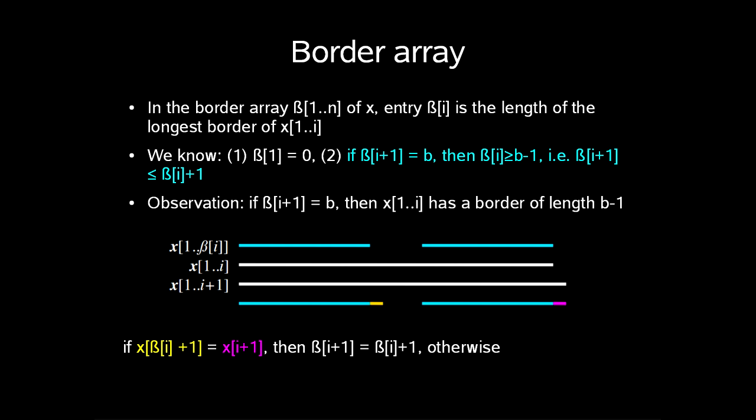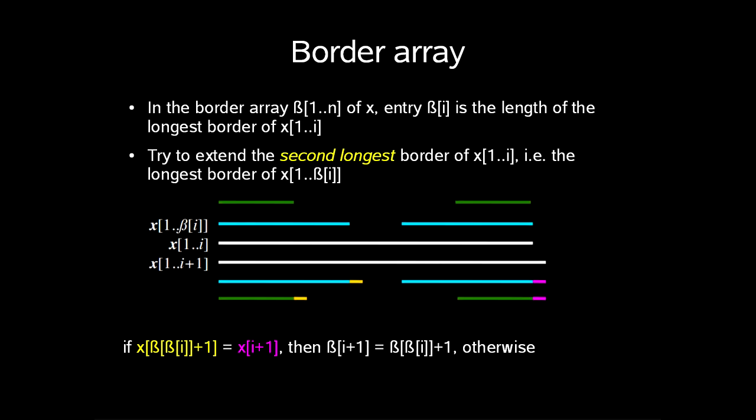We need to know how we can compute beta i plus 1 from beta i. Well, we know that if entry beta i plus 1 in x is equal to entry i plus 1 in x, then entry i plus 1 in beta is equal to entry i in beta plus 1. Otherwise, we try to extend the second longest border of x1 up to i, i.e. the longest border of x1 up to beta i.